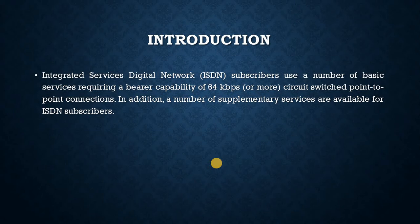Introduction. The Integrated Services Digital Network, ISDN, subscribers use a number of basic services requiring a bare capability of 64 kbps or more, circuit-switched point-to-point connections. A number of supplementary services are also available for ISDN subscribers. The ISUP protocol has the same main functions as other user part protocols, such as the older Telephony User Part, TUP. ISUP is responsible for providing the necessary signaling capability between exchanges to support basic and supplementary ISDN services. ISUP also includes a number of circuit management functions.